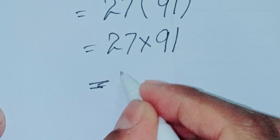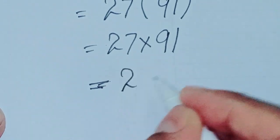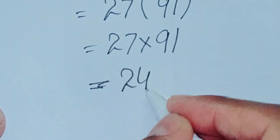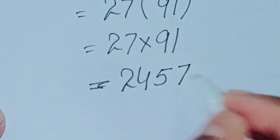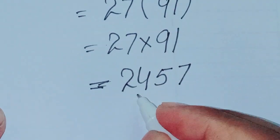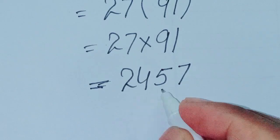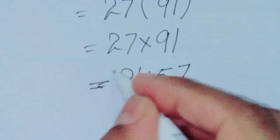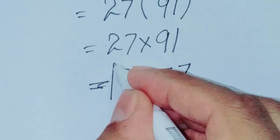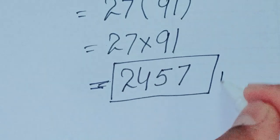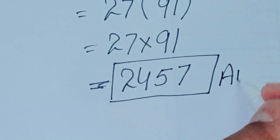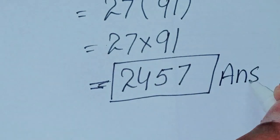The digits of the answer are 2, 4, 5, 7. So 2457 is the answer to this question.